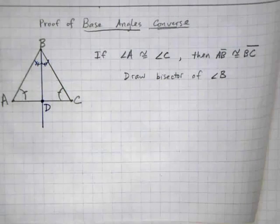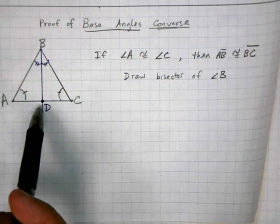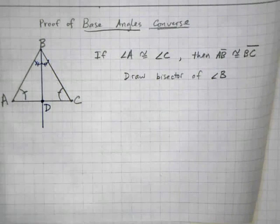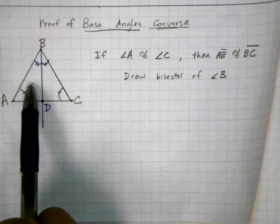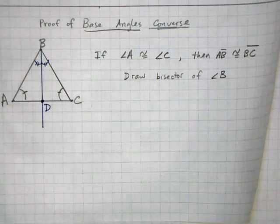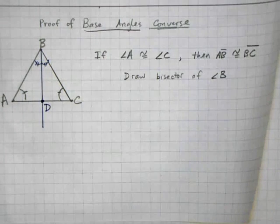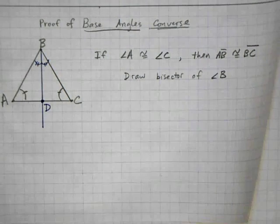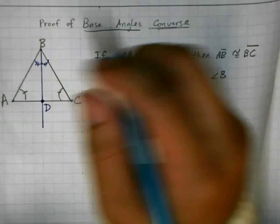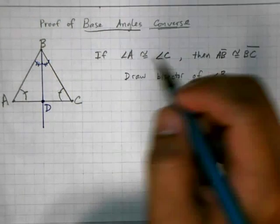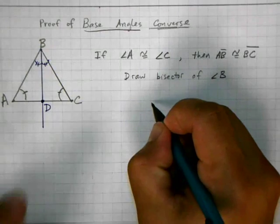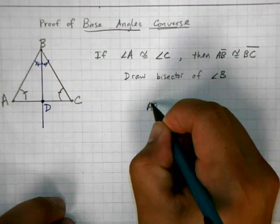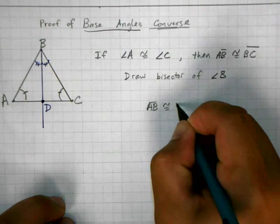Now, once I have this bisector drawn in, I can prove fairly quickly that these two triangles, ABD and CBD, are congruent using angle-angle-side. So just to mix things up a little bit, what I'm going to do here is use a flow proof instead of our traditional two-column proof. So the first thing I'm going to do, and with the flow proof, we start with the conclusion. We start by saying that AB is congruent to BC.